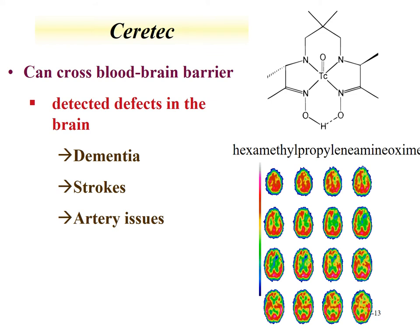Ceretec is another example of a technetium compound. It has the property of crossing the blood-brain barrier and can be used to image the function of the brain — for instance, to evaluate the presence of dementia, whether strokes have influenced brain activity, or if there are any clogging or clotting issues with arteries that feed the brain.